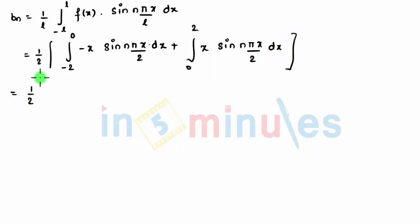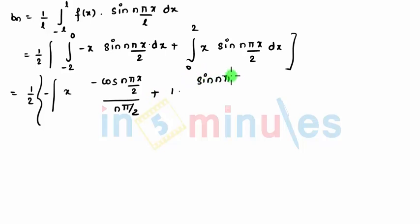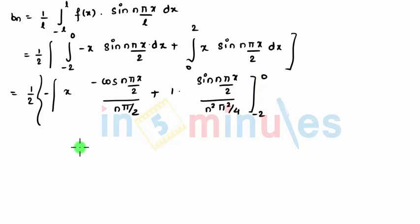This comes to be 1/2, and I keep the minus outside. Integration gives x times (-cos(n pi x / 2)) divided by (n pi / 2), for the first part. Then differentiation of x is 1, and integration of minus cosine gives minus sine, so I make this plus sine(n pi x / 2) divided by (n² pi² / 4). That's the first term with limits from -2 to 0.